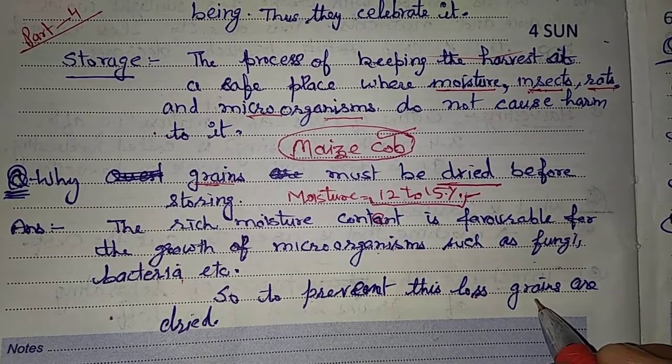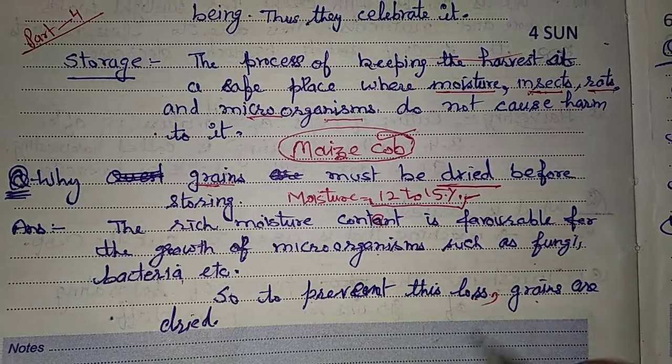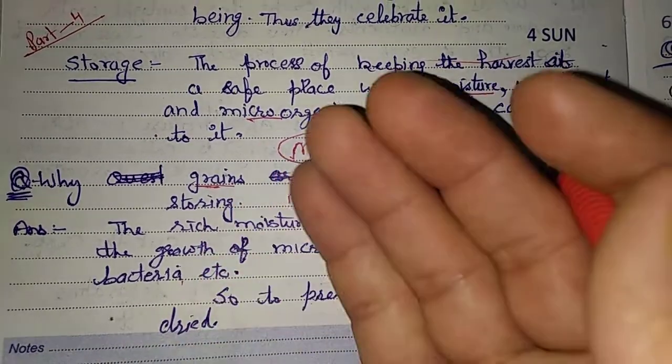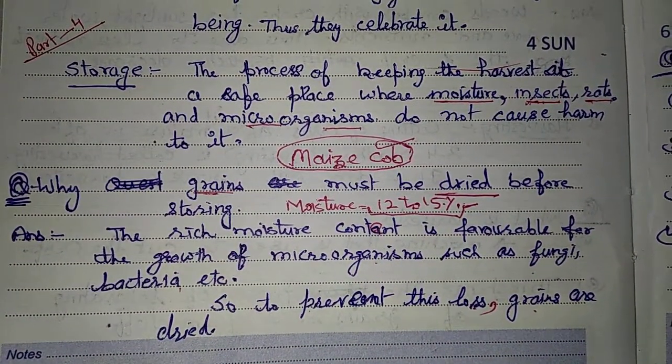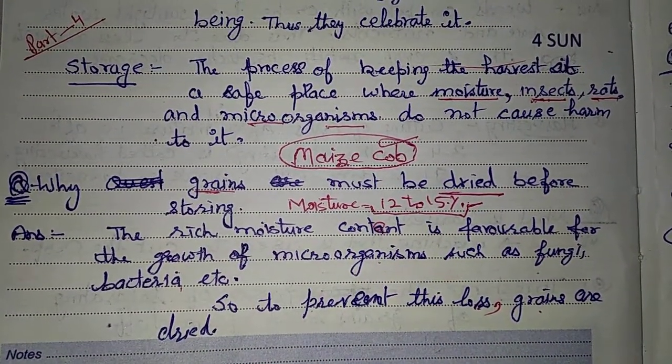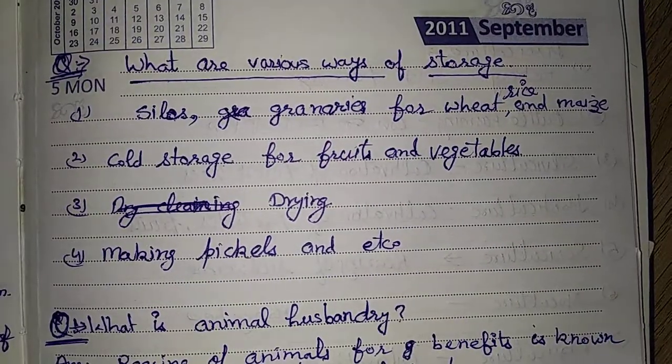To prevent loss, we dry the grains — so that our crop is not damaged. For this we dry them before storing.